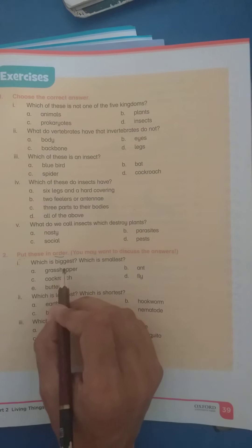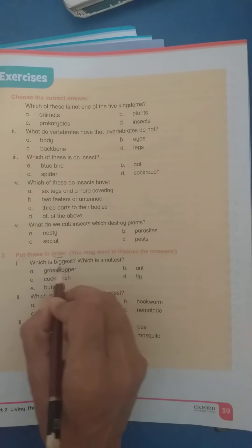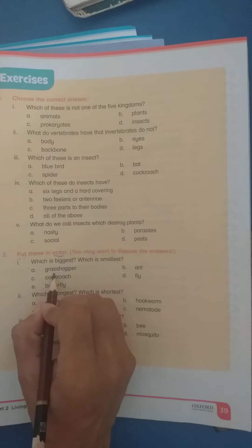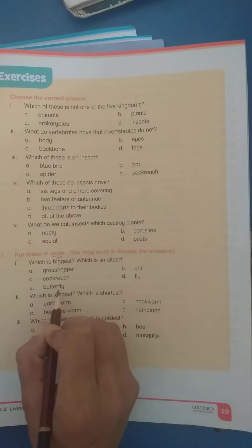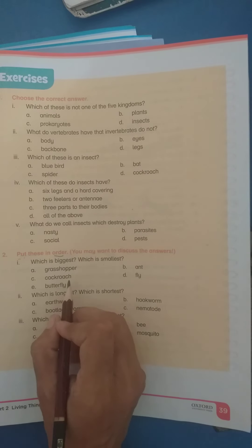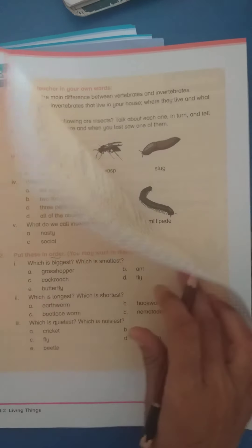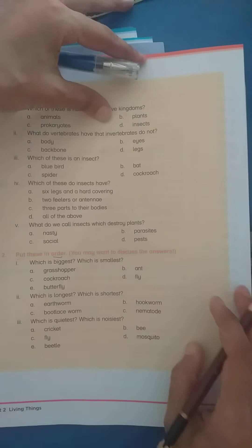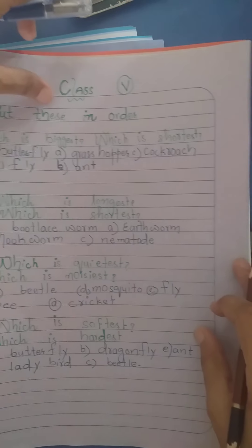Number 1 is which of these is biggest and which is smallest. Here are some insects such as grasshopper, ant, cockroach, fly and butterfly. Now these insects are all in this order. So what should you do? You have to put these all in order. So number 1 is which is biggest, which is shortest.